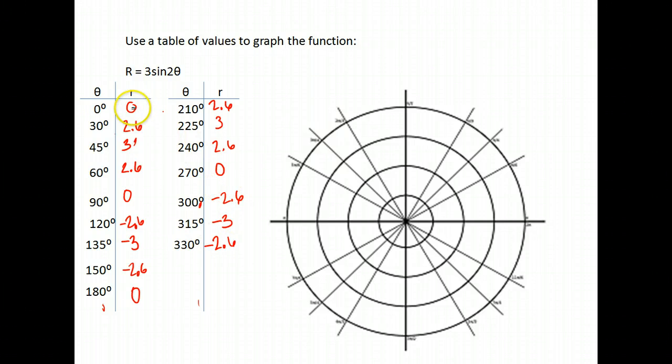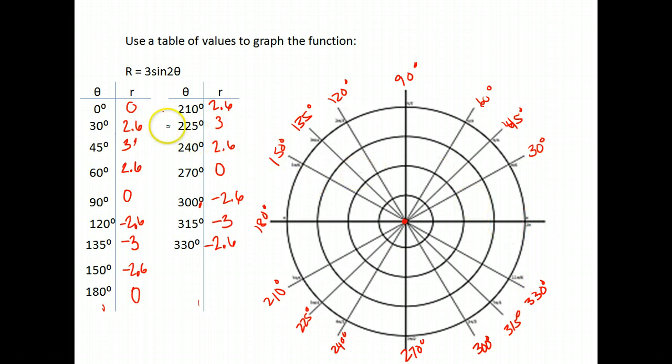So I finished filling in my values here. Let's graph our points that we have. So we have the point 0, 0. 30 and 2.6. So we open up to the 30 degree angle. Again, I forgot to label my axes. So 0, 0 we graphed.